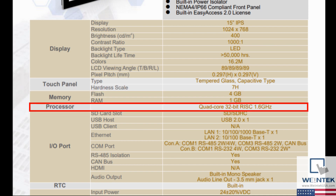Just like your smartphone or computer, this HMI has a processor. The processor allows the HMI to execute its program. This specific HMI is equipped with a quad core Cortex A17 CPU. In certain applications like motion control in which response time is critical, it is very important to have a fast processor that is up to the task.